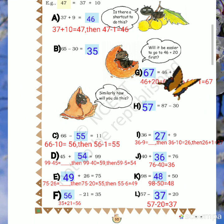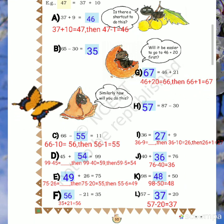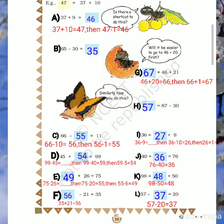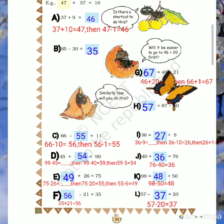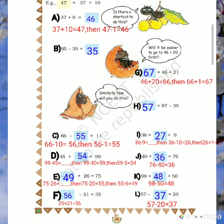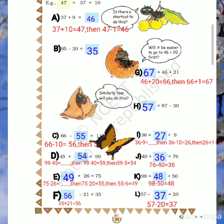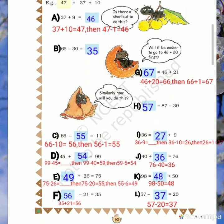B: 65 minus 30. Start at 65 and go 30 steps backward. 10 steps back: 55. 10 more steps back: 45. And 10 more steps back: 35.